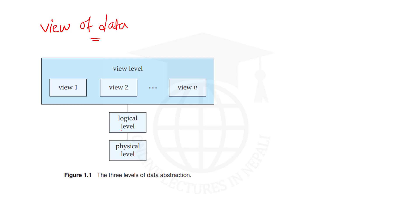To simplify the interaction of user and database, the database management system hides some information which is not of the user's interest. The user has their own purpose and the database has its own organization purpose, so not all information needs to be shown to every user.